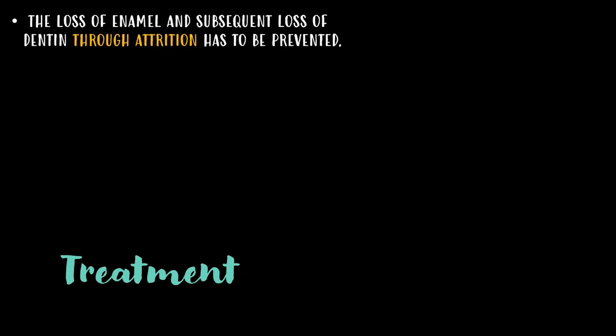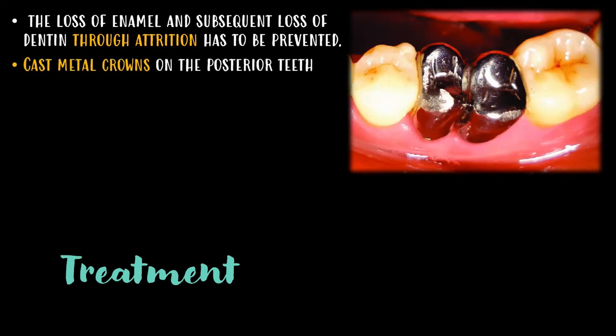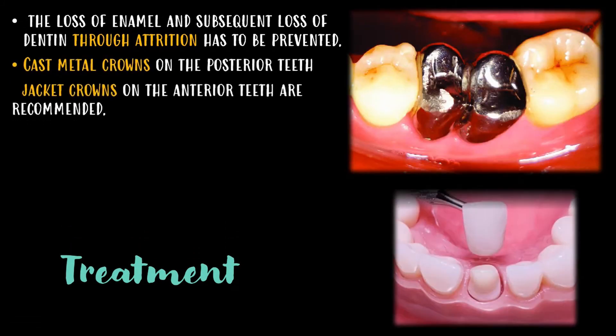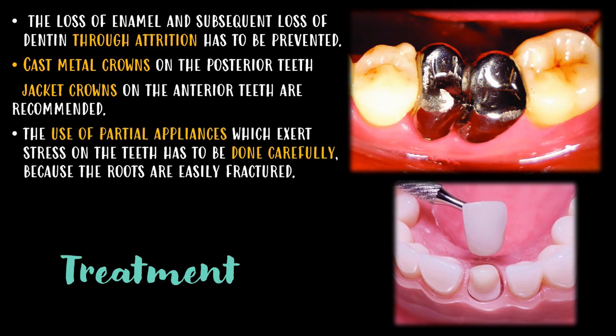Coming to the treatment of Dentinogenesis imperfecta, the loss of enamel and subsequent loss of dentin through attrition has to be prevented. Cast metal crowns on the posterior teeth and jacket crowns on the anterior teeth are recommended. The use of partial appliances which exert stress on the teeth has to be done carefully because it may lead to fracture of roots.